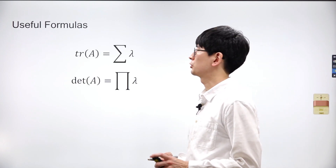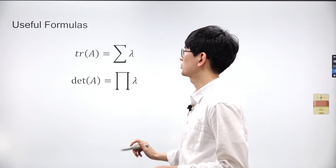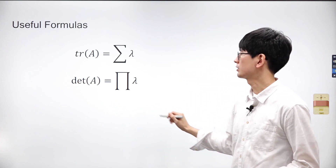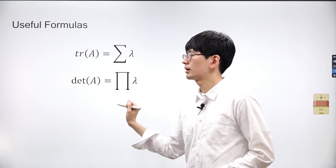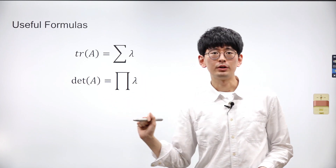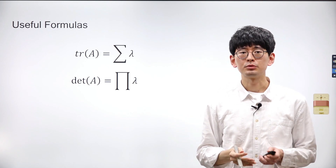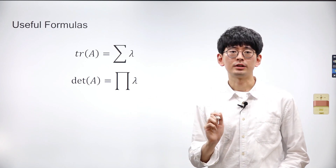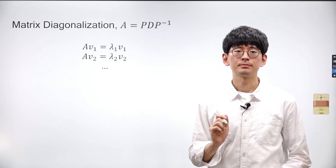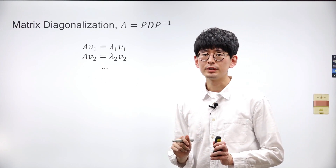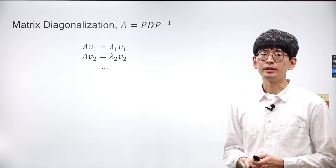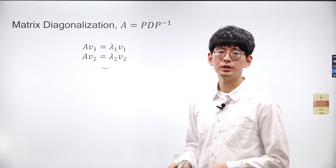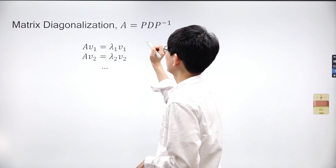Let's quickly go over some useful formulas related to eigenvalues. The trace of a square matrix is the sum of its diagonal elements, and also equals the sum of its eigenvalues, while the determinant of the matrix is the product of its eigenvalues. Matrix diagonalization is a key concept that underscores the importance of understanding eigenvalues and eigenvectors.